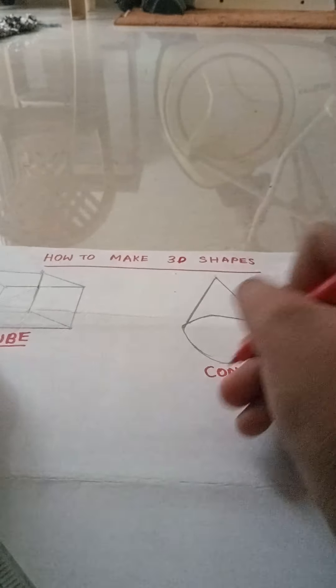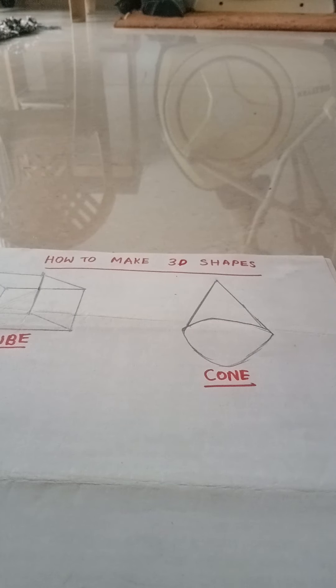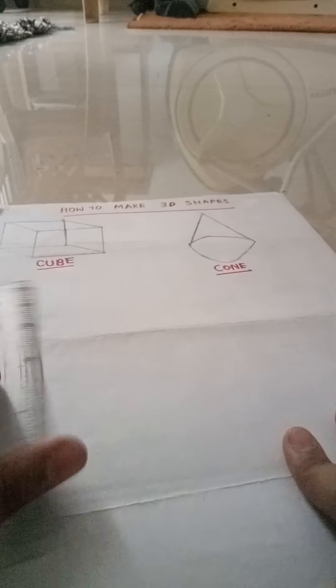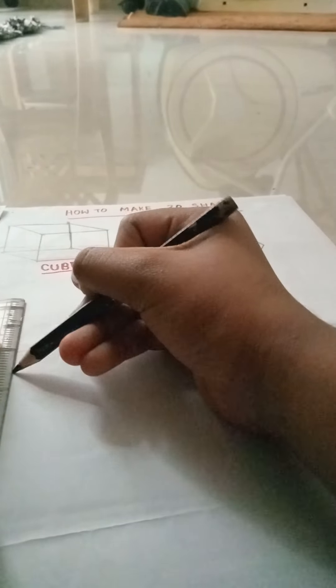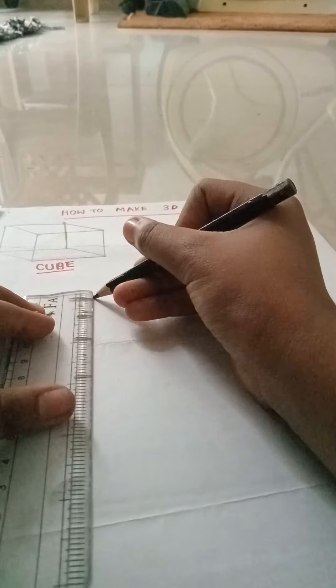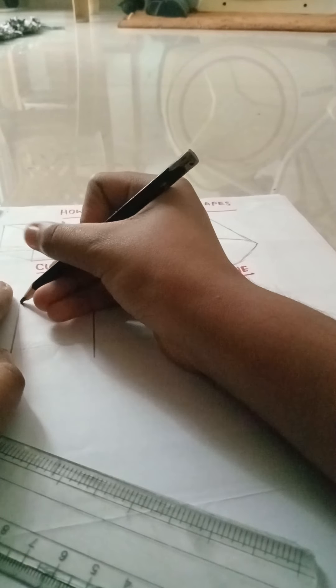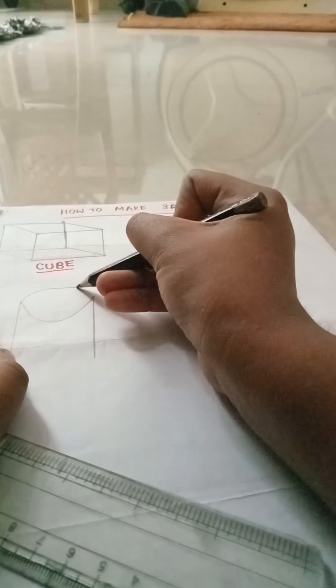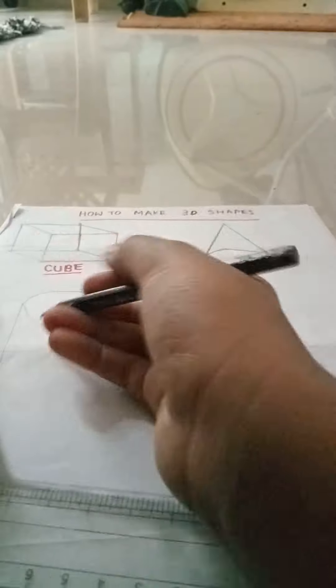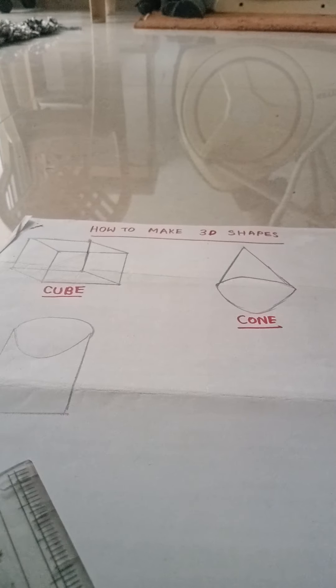Okay guys, now we are making the cylinder. It is easy enough for anyone. First we have to put a standing line here and one more standing line here. Then we have to put a circle - first you put one and from that you have to put like this. So our cylinder is also ready. See how neatly we have done it.